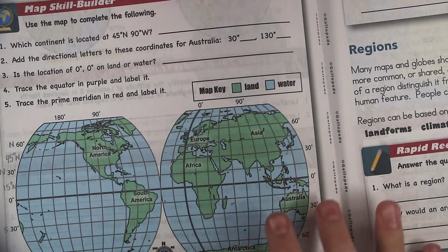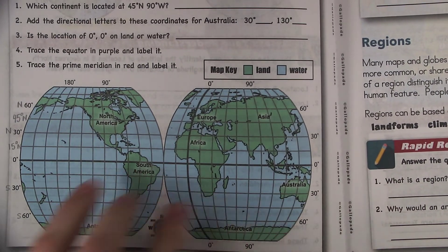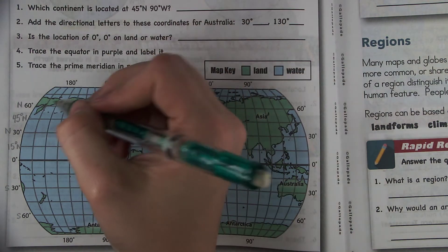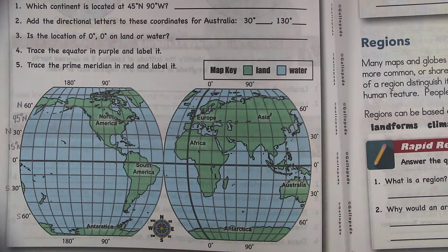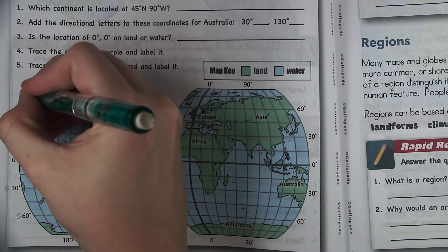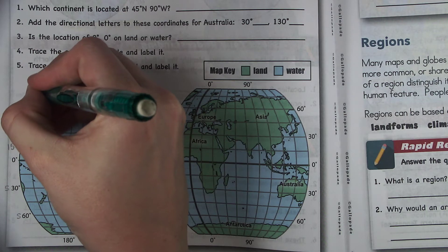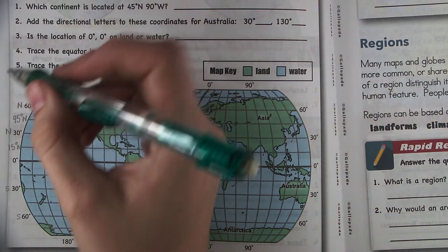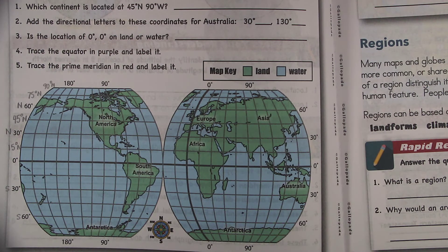So it doesn't really tell you that. You kind of just have to figure it out. So that's why I'm helping you with this first one. And then above 60 would be 75 degrees. And then the very top would be 90 degrees. So those are those coordinates.